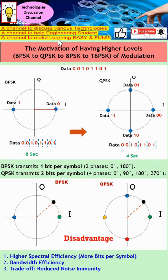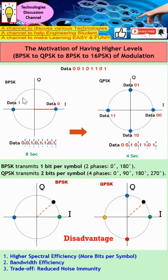I'd like to discuss the motivation for having higher-level modulation. We always want to move from BPSK to QPSK, maybe to 8 or even 16 PSK. These two diagrams show the constellation diagram. Let's focus on BPSK first. When data equals zero, we have a phase shift of zero to indicate this. When data is one, we have a phase shift of 180 degrees.